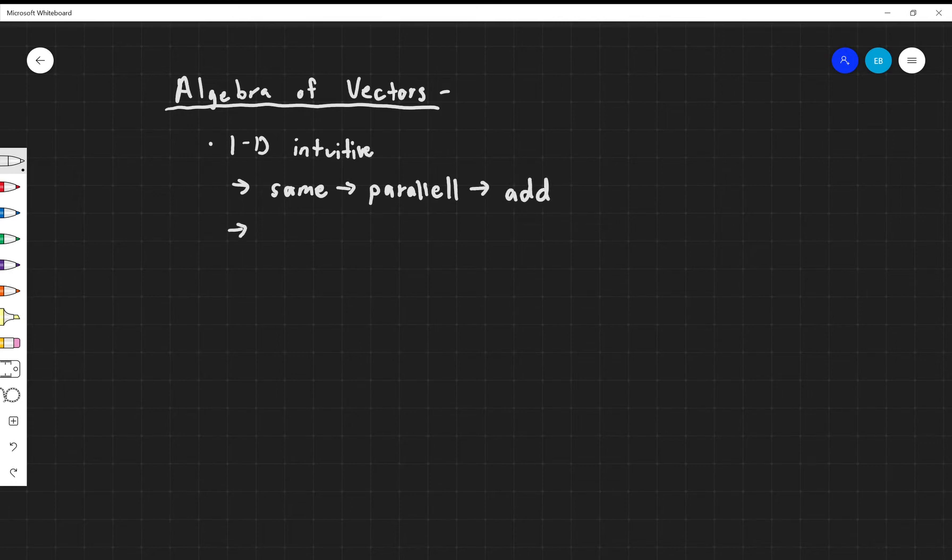If two vectors are going in opposite directions in 1D, they're said to be anti-parallel. So if your vectors are going anti-parallel, then you don't add them, you subtract them. That's pretty easy, pretty straightforward.